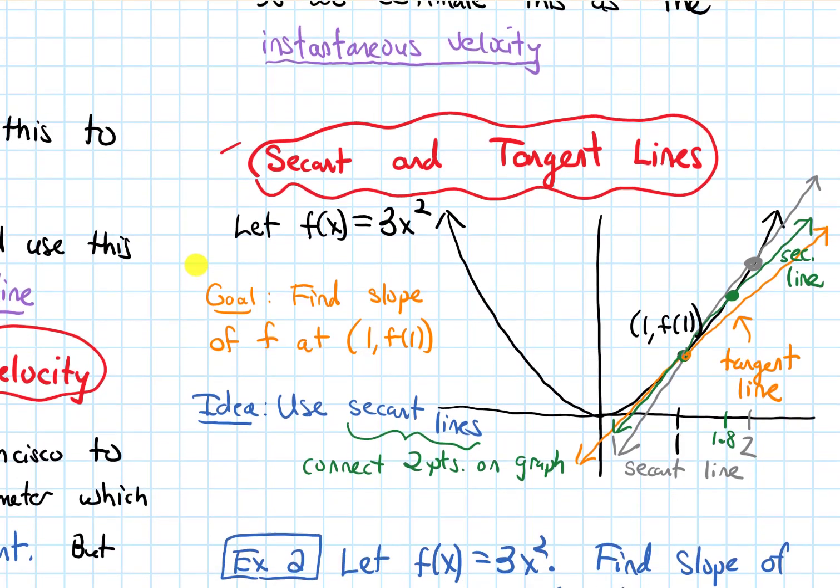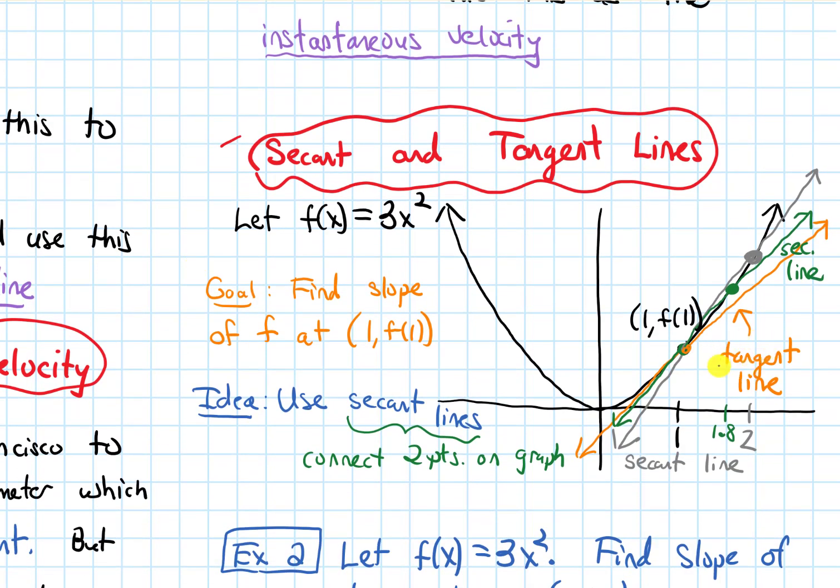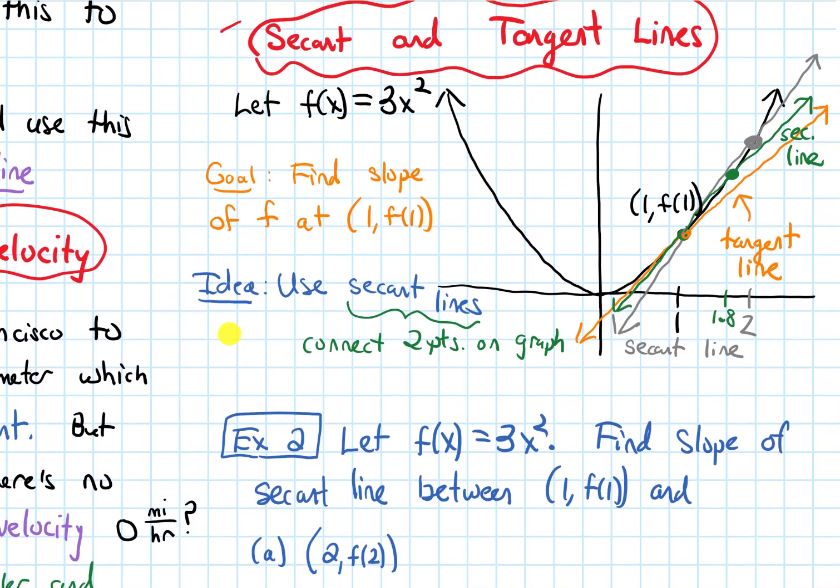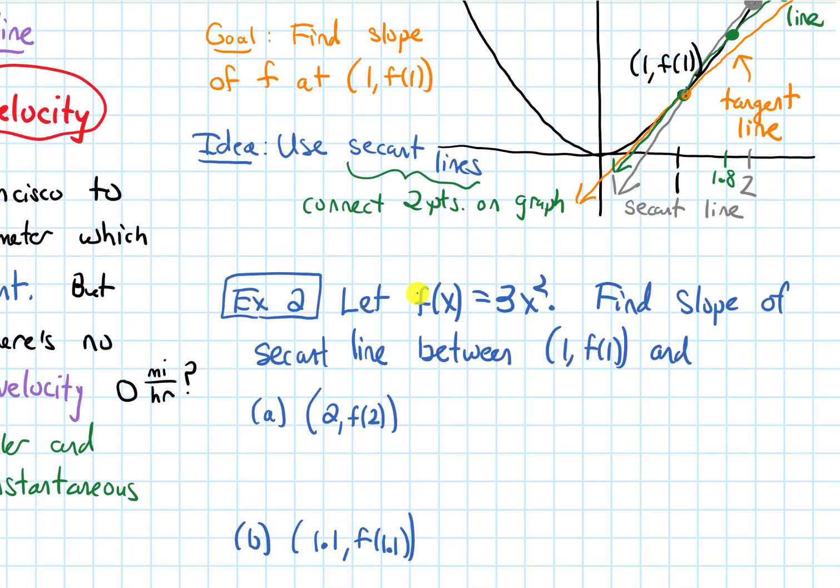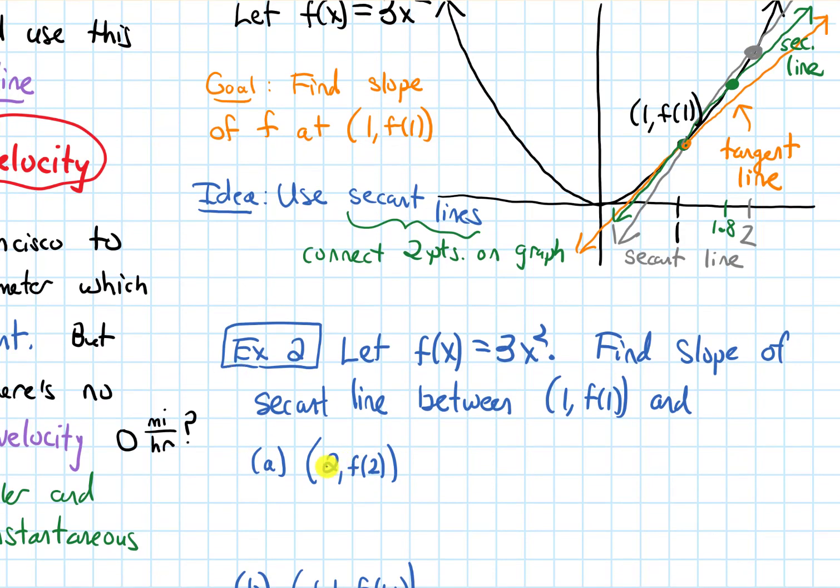Alright, so let's look at an example where we start to estimate the slope of this tangent line. I'm going to be looking at my function 3x squared and I'm going to find the slope of the secant line between the point I cared about, 1 comma f of 1, and in part a, that point and the point 2 comma f of 2.